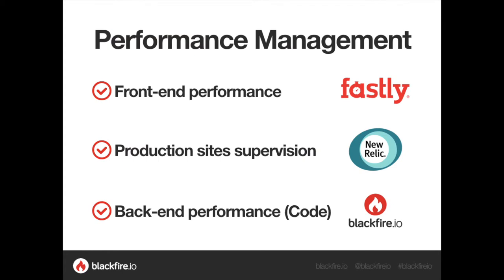Within the cloud package, there are three different performance management solutions: Fastly, New Relic, and Blackfire. Fastly is your content delivery network — it puts your content as close as possible to end users. Now, between New Relic and Blackfire, we've had a lot of questions about what the actual difference is. New Relic is here to supervise all of the traffic coming to your production website, giving very valuable information on the performance of the infrastructure and also on the code.